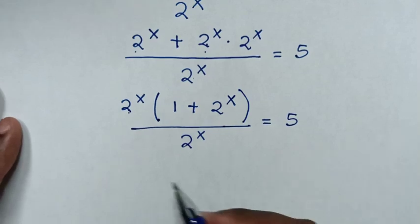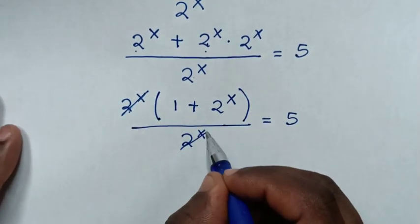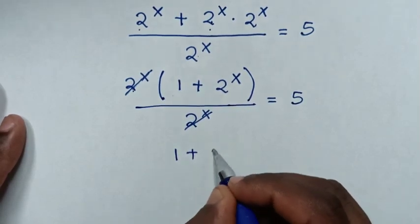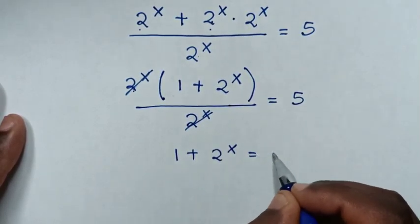Then to simplify, this 2 power of x will cancel this 2 power of x, so it will be inside the bracket 1 plus 2 power of x is equal to 5.